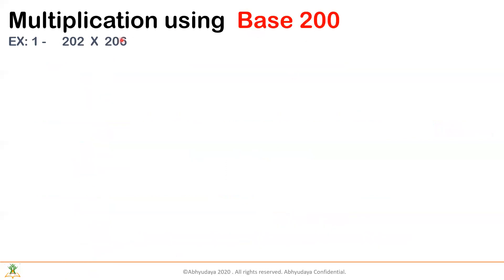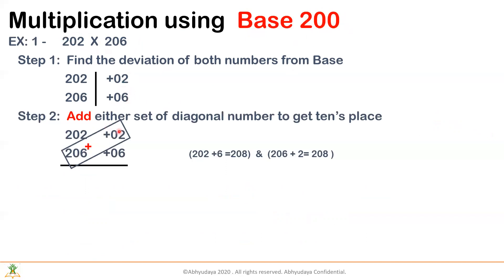What happens when the base is 200? Here you can see both numbers are close to 200. The deviation is again—now you have to write a two-digit number because the base has two zeros in it. So 02 and 06. You add diagonally. So 206 plus 2 is 208.